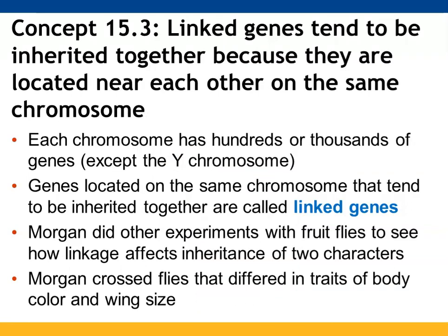Linked genes are genes that tend to be found and passed on to offspring as a unit because they are close together on a chromosome. There are many, many genes present on chromosomes with the exception of the small Y chromosome. The closer genes are to one another on a chromosome, the more likely they will be passed on as a unit and considered genetically linked. Morgan provided justification for this by looking at two characters on the same chromosome — body color and wing size — to see how they would be passed on to offspring.